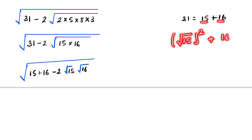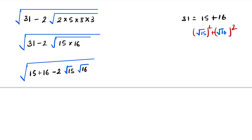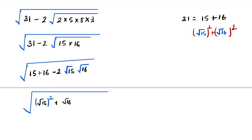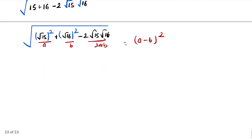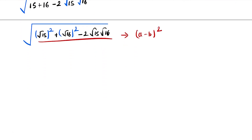This can be written as under root 15 the whole square plus under root 16 the whole square minus 2 times under root 15 into under root 16, which fits the form of a minus b the whole square.